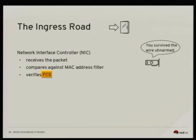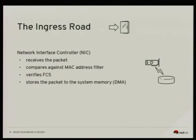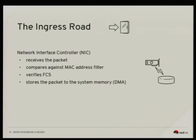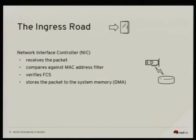Next, the hardware verifies the Ethernet checksum. If it's incorrect, it drops the packet; if correct, it continues. The FCS (frame check sequence) is not reported to the operating system — it's discarded by the NIC. The NIC then stores the packet to system memory using DMA, into a buffer that was previously programmed by the driver. The driver allocates memory for several packets and tells the NIC where the buffers are, and the NIC uses these buffers to store incoming packets.